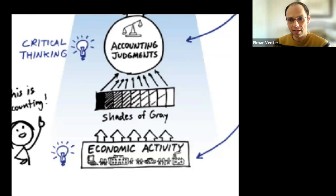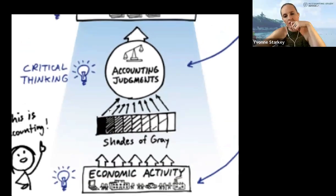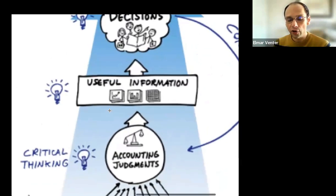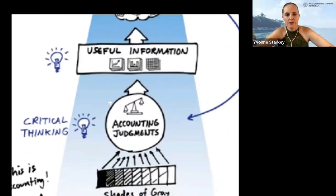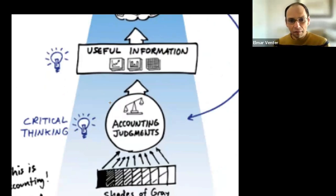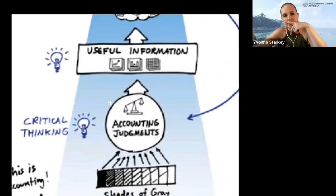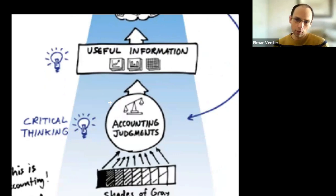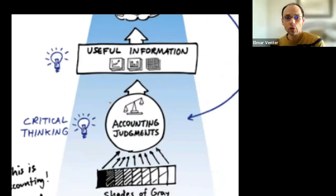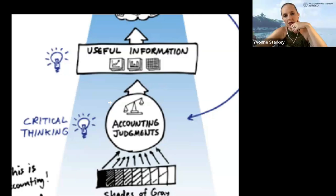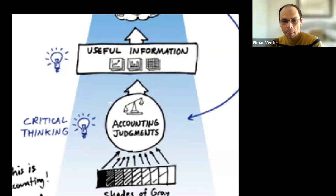And I think once you grasp the economics, then the question comes up higher in that diagram to say, okay, now I need to figure out as an accountant. And before just jumping into the standard, if I was the standard setter, how would I account for this transaction? How would I account for this economic phenomenon? What type of disclosures would I provide so that the users of financial statements can get a good understanding of what happened in reality? Because that's what we're trying to do. That's what the standards are trying to do.